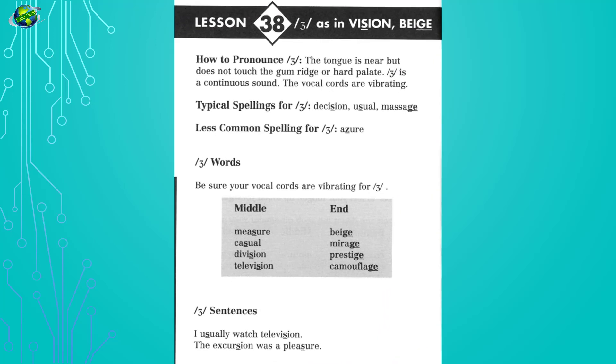Lesson 38: Zh as in vision, beige. Listen and repeat. Measure, casual, division, television, beige, mirage, prestige, camouflage. I usually watch television. The excursion was a pleasure.